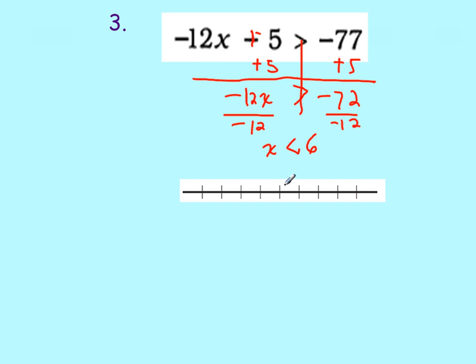Negative 72 divided by negative 12 is 6. So our answer is x is less than 6. So put 6 as our key number. Let's put 6 as our key number. It gets an open circle. We're going to the left. That's the answer for number 3.